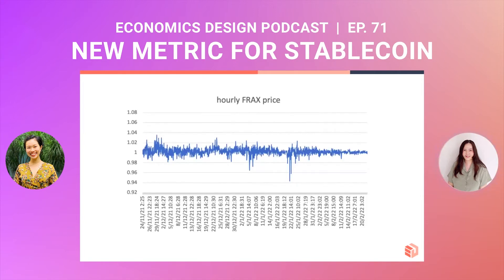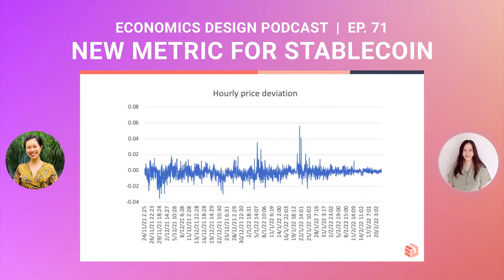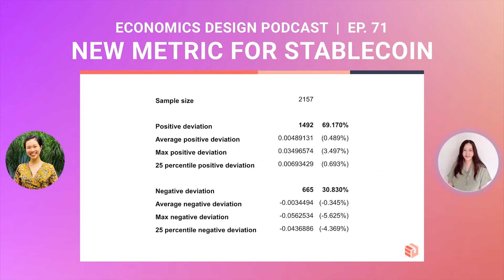This is a plot of the hourly FRAX price for the past 90 days. We see that it is constantly revolving around the $1 peg value, with some shocks in between. But as time gets closer to the current period, the deviations become much smaller. From that, we calculate the hourly price deviation. We can see that for 69% of the time, the deviation is positive — meaning the price of FRAX is actually above $1 — and only about 30% of the time is there a negative deviation.